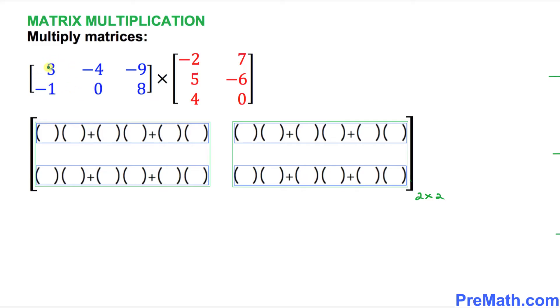Let's focus on the blue matrix on the left-hand side. Look at this column: 3, -1. These numbers are going to go in this slot. The next column, -4, 0, is going to go in this slot, and finally this column is going to go in this slot.